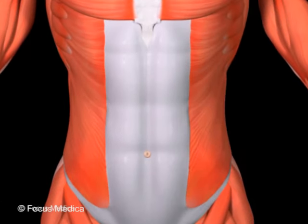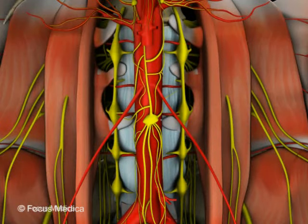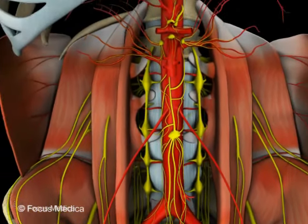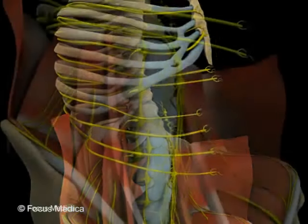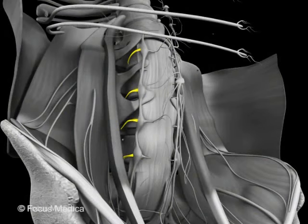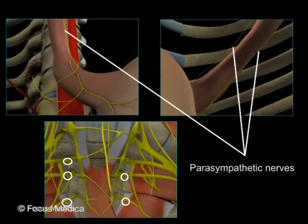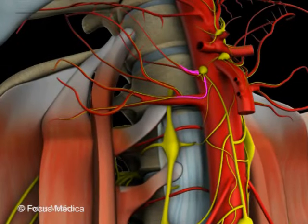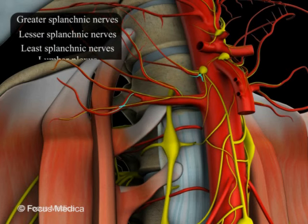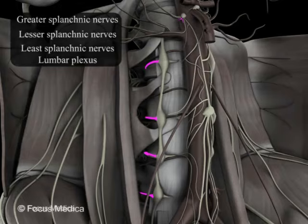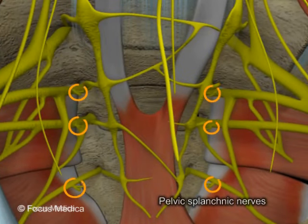The nerves of the abdomen include the somatic and autonomic nerves, associated ganglia, and plexuses. The somatic nerves include the lower intercostal, subcostal, and the lumbar plexus. The autonomic nerve supply is via sympathetic and parasympathetic nerves. The sympathetic nerves include the greater splanchnic, lesser splanchnic, and least splanchnic nerves, and the lumbar plexus. The parasympathetic innervation is via the vagus nerves and the pelvic splanchnic nerves.